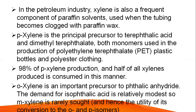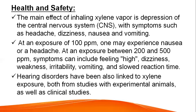In the petroleum industry, xylene is also a frequent component of paraffin solvents used when tubing becomes clogged with paraffin wax. Para xylene is the principal precursor to terephthalic acid and dimethyl terephthalate, both monomers used in the production of polyethylene terephthalate — plastic bottles and polyester clothing. 98 percent of para xylene production, and half of all xylene produced, is consumed in this manner. Ortho xylene is an important precursor to phthalic anhydride. The demand for isophthalic acid is relatively modest, so meta xylene is rarely sought, hence the utility of its conversion to the ortho and para isomers.